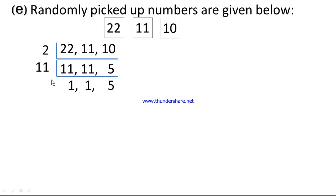Now we have got 2, 11, and 5. So the required LCM, least common multiple, is equal to 2 into 5 into 11 is equal to 110.